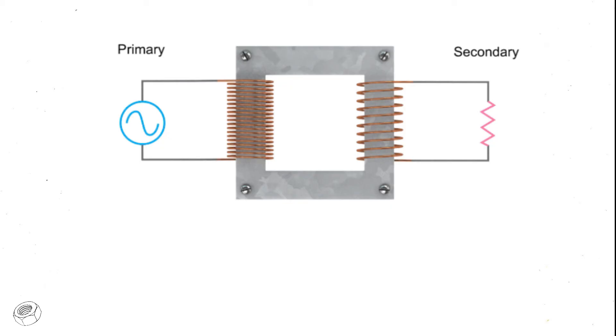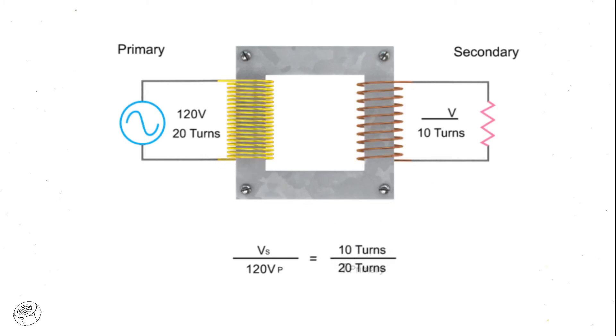In this example, we have 20 turns on the primary coil and 10 turns on the secondary coil. To determine the decrease in voltage occurring in this step-down transformer, we can use a simple ratio formula. This formula simply states that the secondary voltage to primary voltage ratio is the same as the secondary coil to primary coil turn ratio.